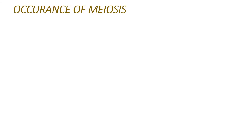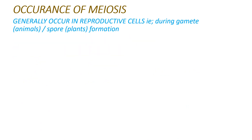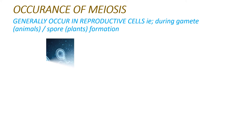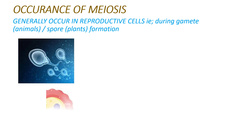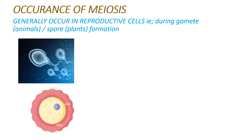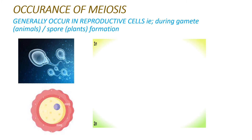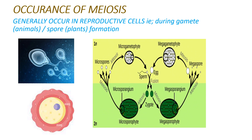Moving on to the occurrence of meiosis: generally, meiosis occurs in reproductive cells — during gamete formation in animals, where sperms in males and ova in females are formed as a result of meiosis, and during spore formation in plants, where different spores like megaspores and microspores are formed as a result of meiosis.